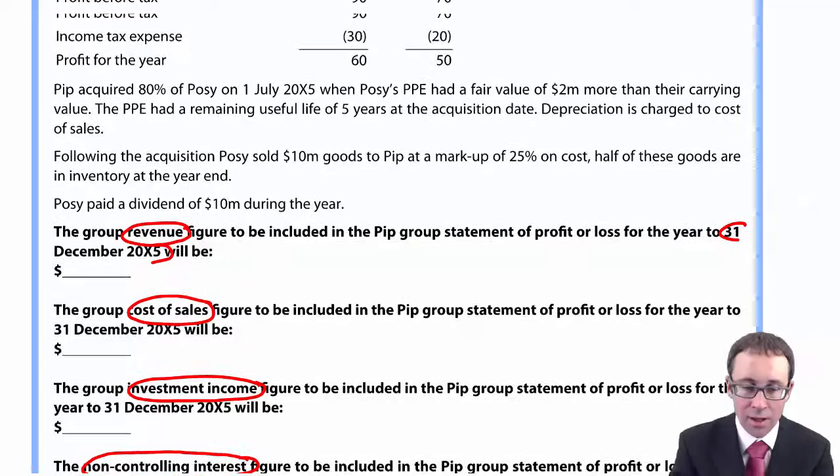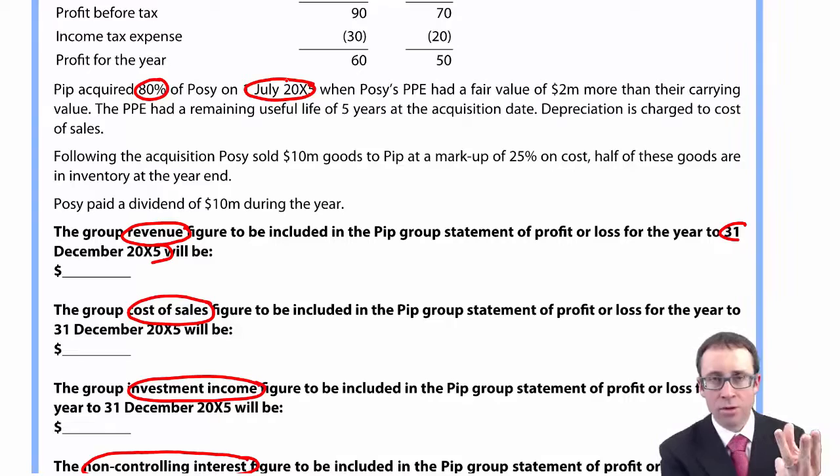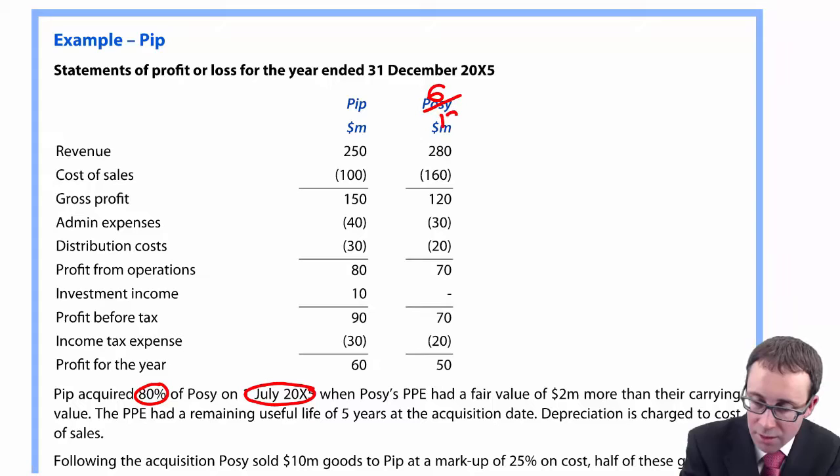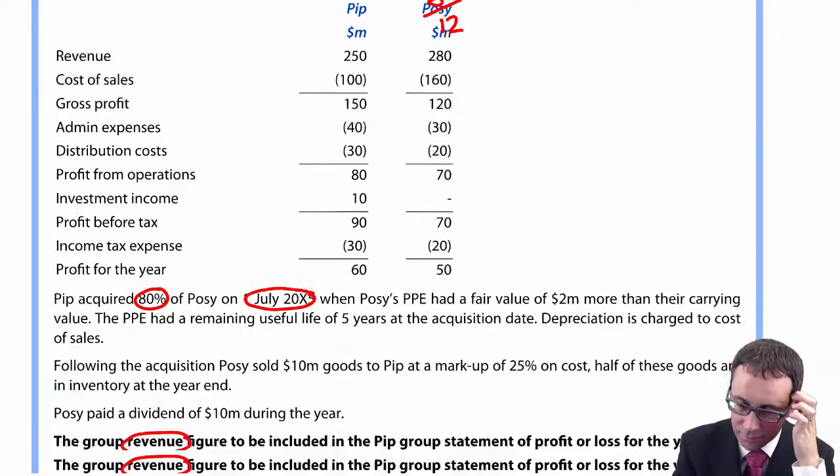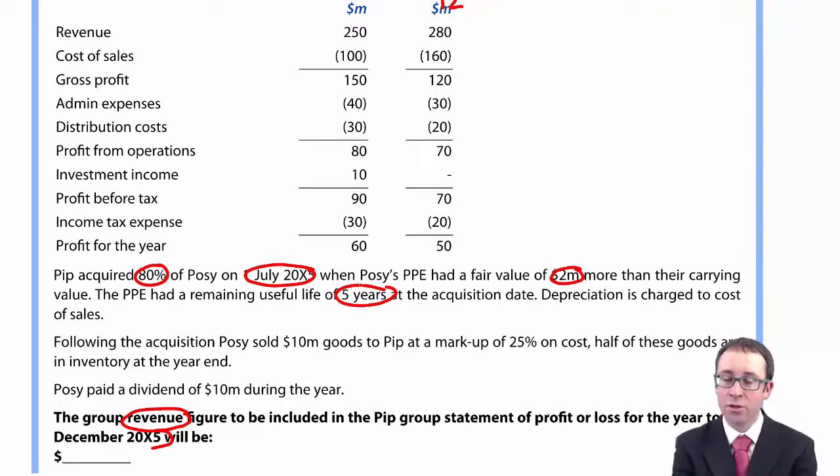So let's go through and have a look at the information. So what you've got there, we know Pip is the parent. It acquired 80 percent, so we have control of Posy. So there's a 20 percent NCI. It was bought on the 1st of July 20x5. So July, August, September, October, November, December. So you have there when you're consolidating the results of Posy, the subsidiary, you need to put in 6 twelfths.